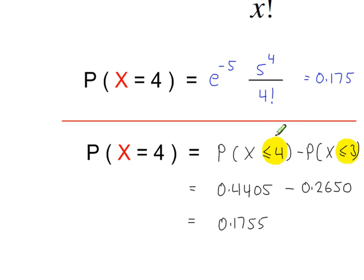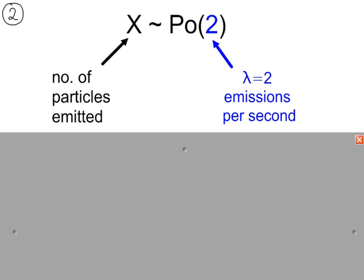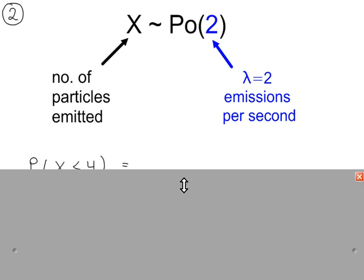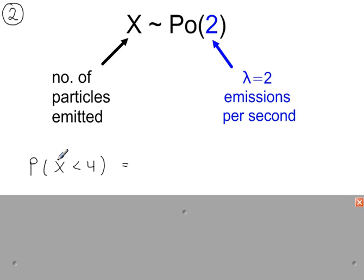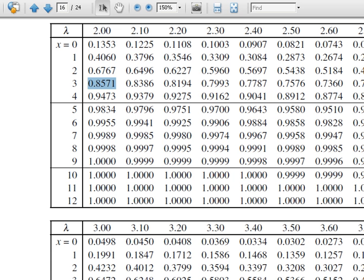Example 2. We can use the cumulative Poisson tables to calculate P(X = 4). With lambda now equal to 2, and looking for P(X < 4): less than 4 means we look up P(X ≤ 3) from the tables. With lambda = 2, P(X ≤ 3) gives 0.8571.